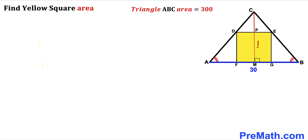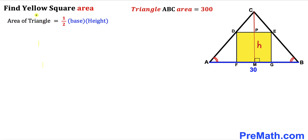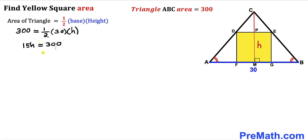Let's label this height as lowercase h. The base of triangle ABC is 30 and the area is 300. Recalling the area of a triangle formula: area equals one-half times base times height. So 300 equals one-half times 30 times h, which gives us 15h equals 300. Dividing both sides by 15, our height h turns out to be 20 units.